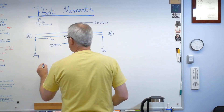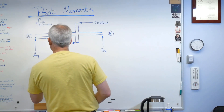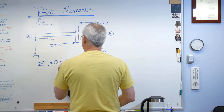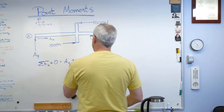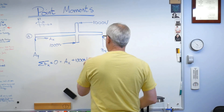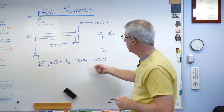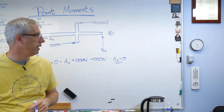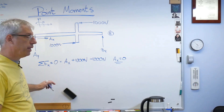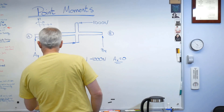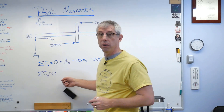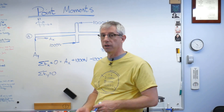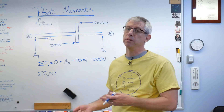Summing forces in the horizontal x-direction equals zero: Ax plus a thousand newtons minus a thousand newtons equals zero, so Ax equals zero — you could kind of see that coming. Now summing forces in the y-direction, also equal to zero — remember, in statics the sum of forces must be zero. If it's not zero, the object is accelerating; that's dynamics, a different class.